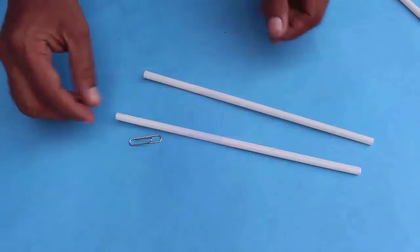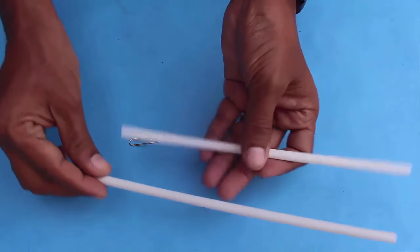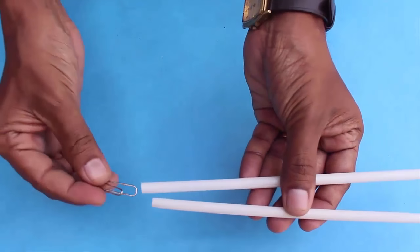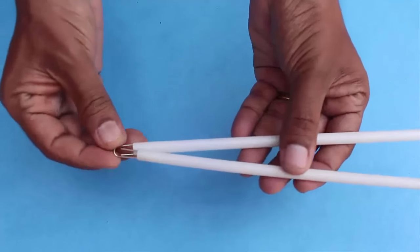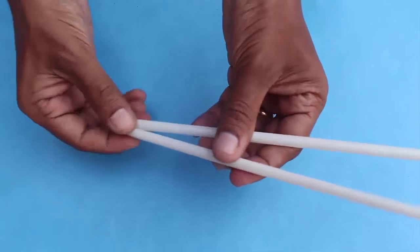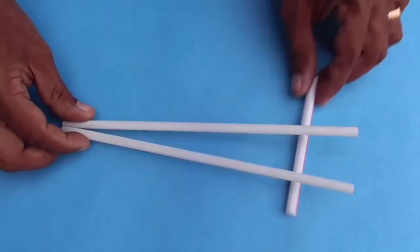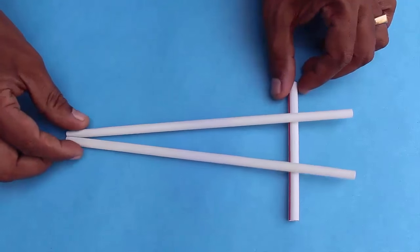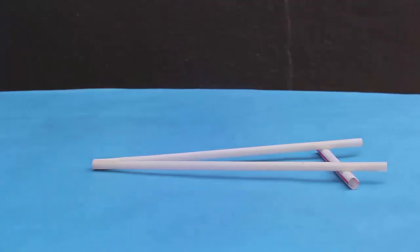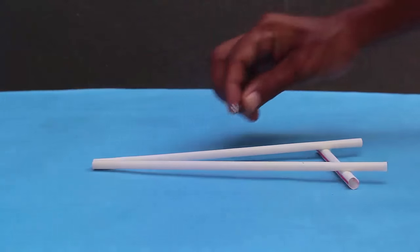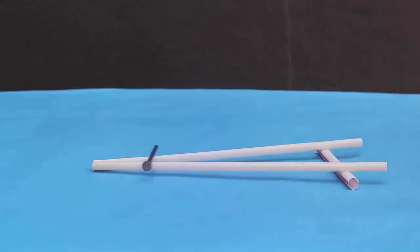Take the two straws and insert the paper clip just like this to make an angle. Now place the other straw under it so it will make a slope. Now place the nail over it.